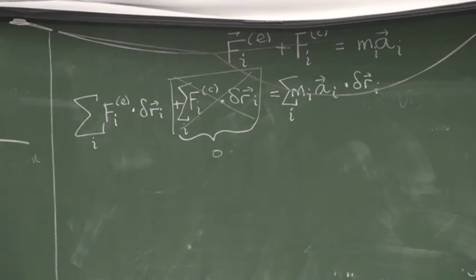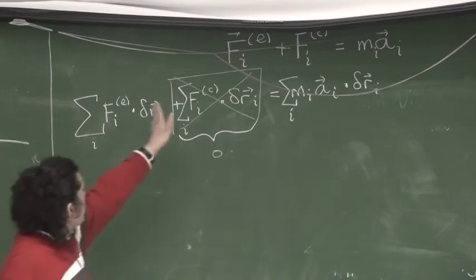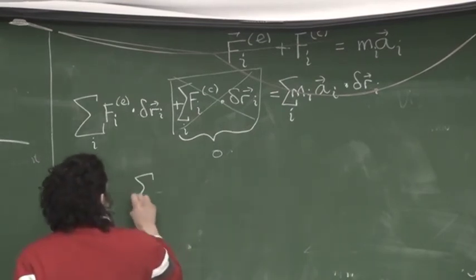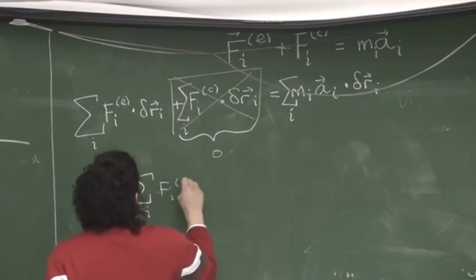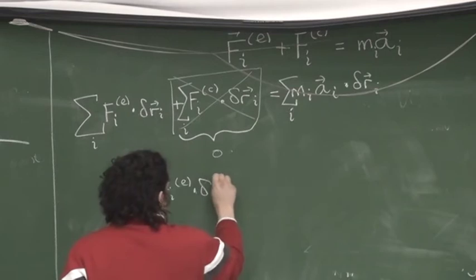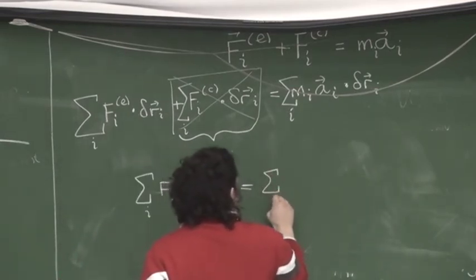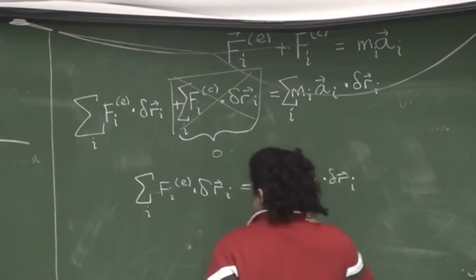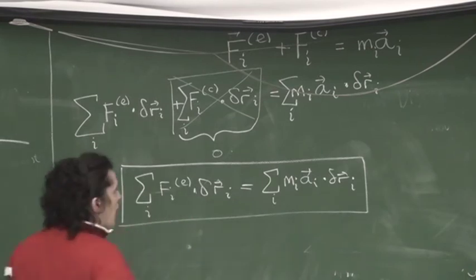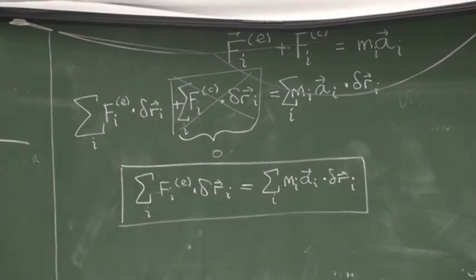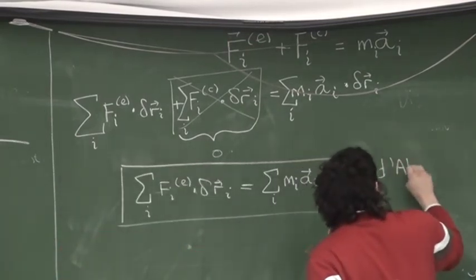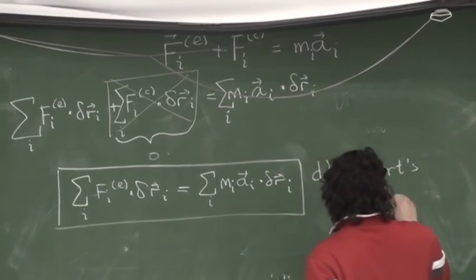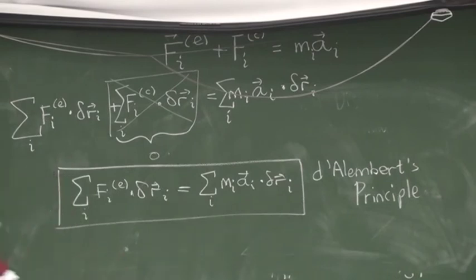So, what do we have? We have a new equation. There are no forces of constraint in this equation. The forces of constraint are passing. So, we can write this out as sum over i, Fi dot δri is equal to sum over i, mi ai dot δri. This guy is known as, variously, the principle of virtual work, and more commonly, D'Alembert's principle.